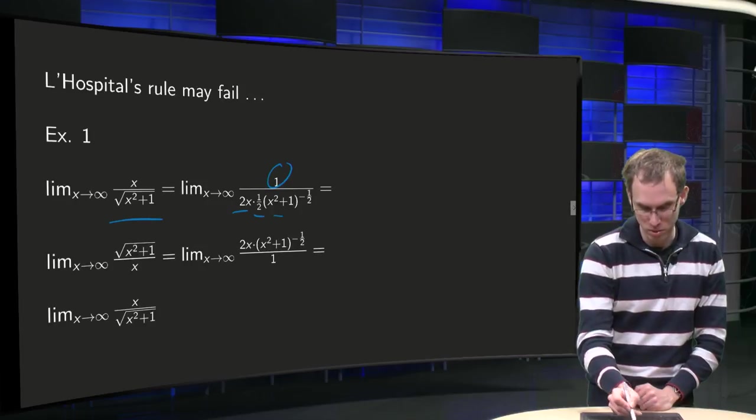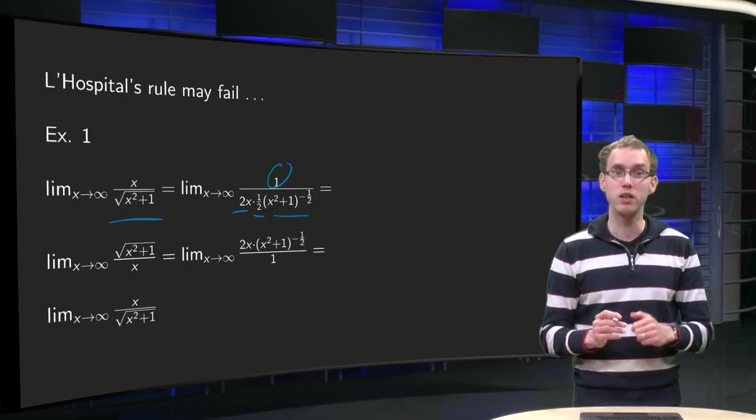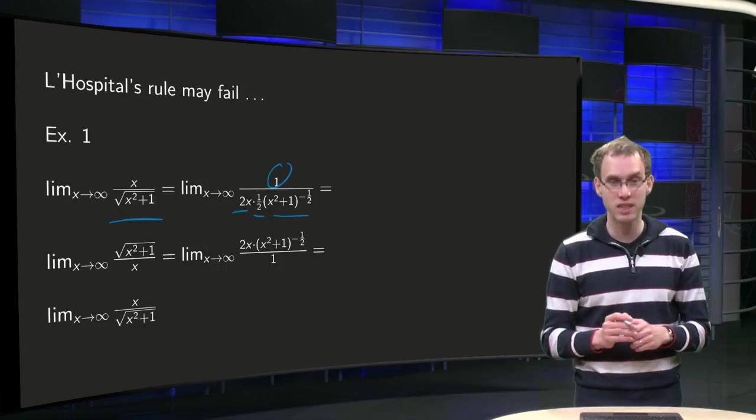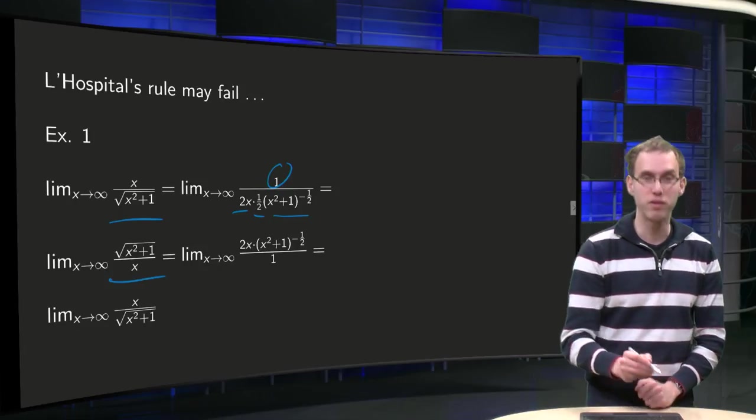So 2x times 1 half, rubbish to the power minus 1 half. Simplify a bit: 2x times 1 half equals x, and rubbish to the power minus 1 half goes to the numerator, and we have this limit.